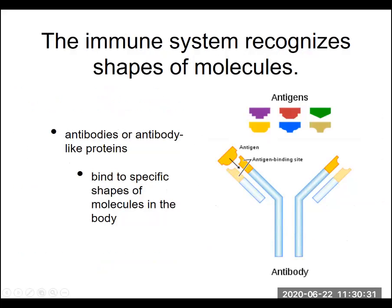What we need to do is understand a little bit about the biology — about why you can't just take an organ off the shelf and put it into a patient and have it work the way you want. What we're going to talk about is the immune system.